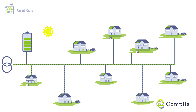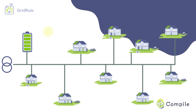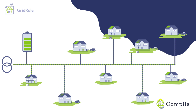By managing the community battery, Grid Rule stores the excess energy generated by photovoltaics during the day and dispatches it during the night or a cloudy day.